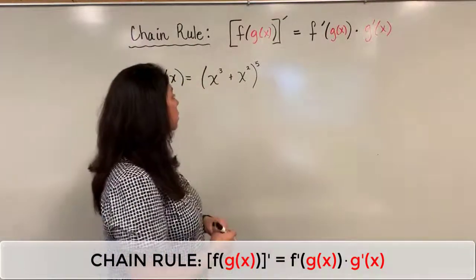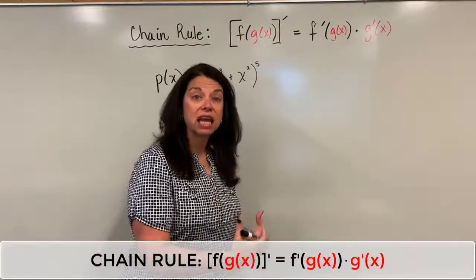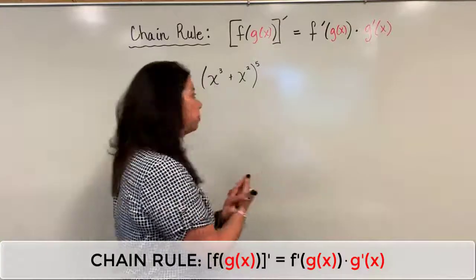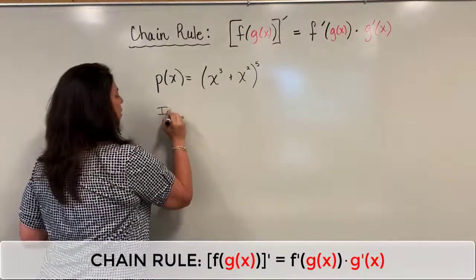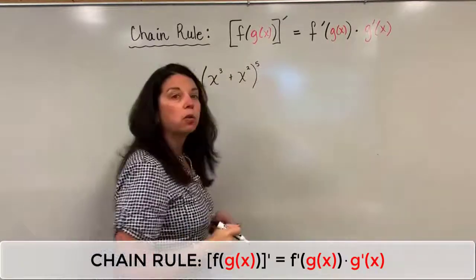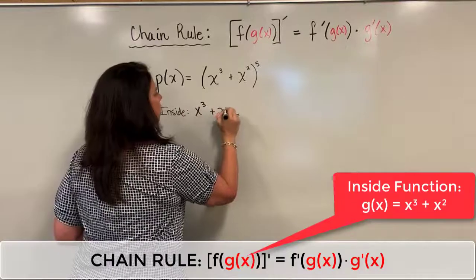In this particular example, it's a little bit cleaner and easier to see what the inside function is because I have parentheses to showcase that for me. So the inside part—just to write myself a little note here—the inside function will be the quantity inside those parentheses, so we have x cubed plus x squared.